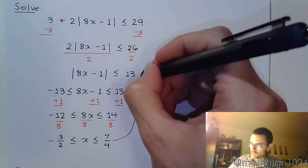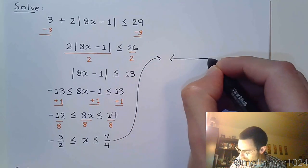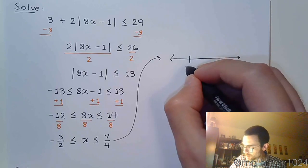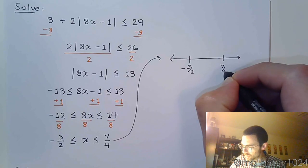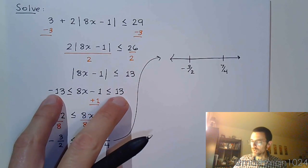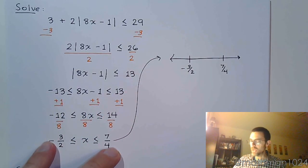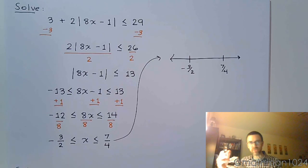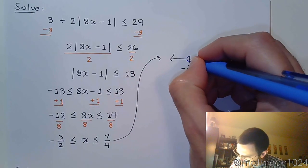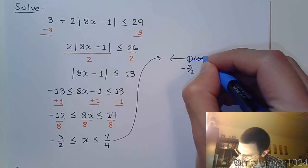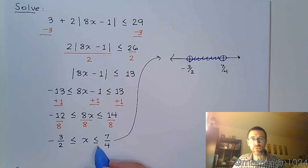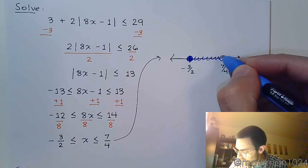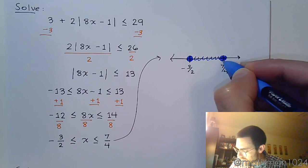I'm going to look at this on a number line. I've got negative 3 halves, I've got 7 fourths. And you see, every step along the way here for this compound inequality, it's going to be true. What's on the left is less than what's on the right. My solutions are bounded in between these guys. And not only that, but you've got the or equal to pieces here for the inequality, so both of these are going to be included.